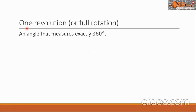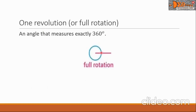The next is one revolution, or full rotation. It is an angle that measures exactly 360 degrees. Here is a picture of one revolution or full rotation. In this angle, the initial side and the terminal side coincide.